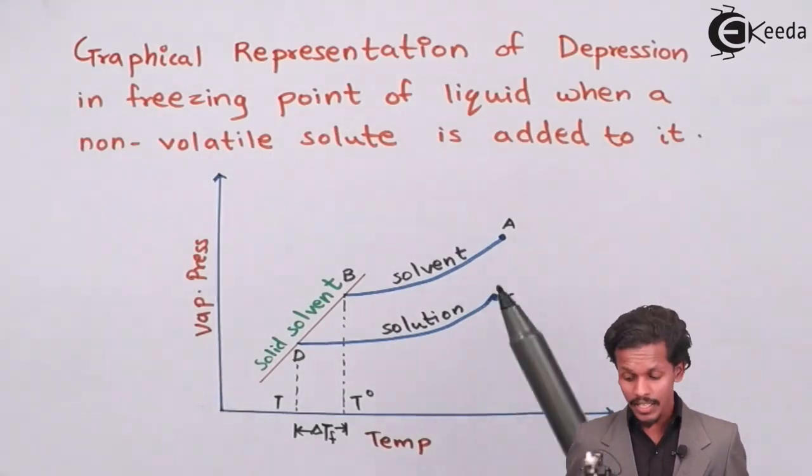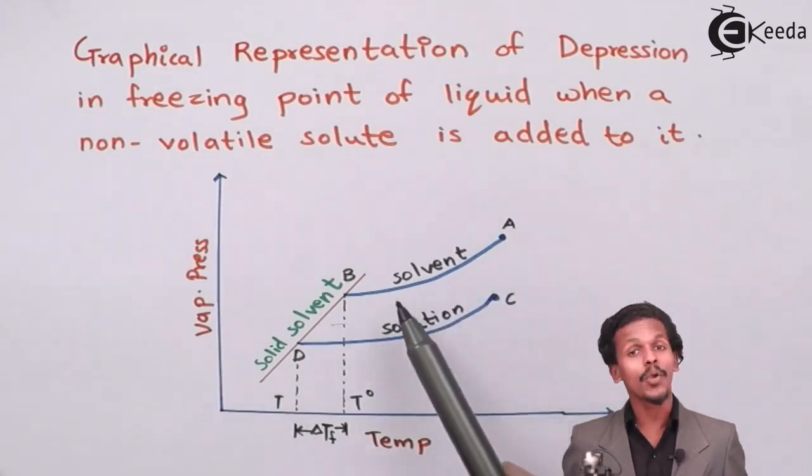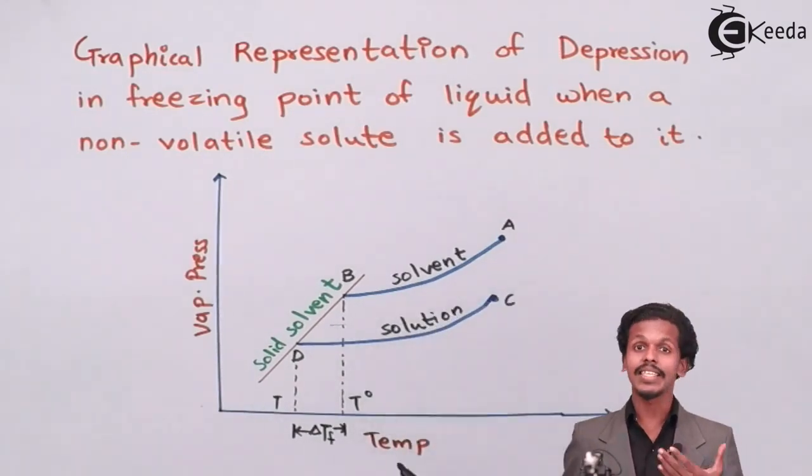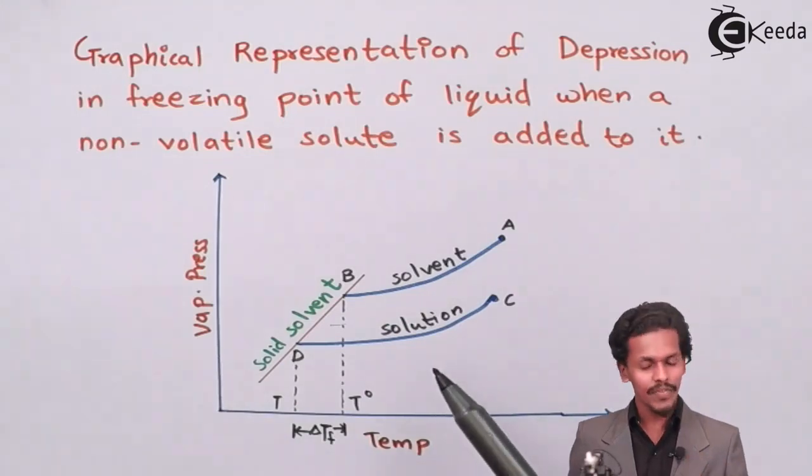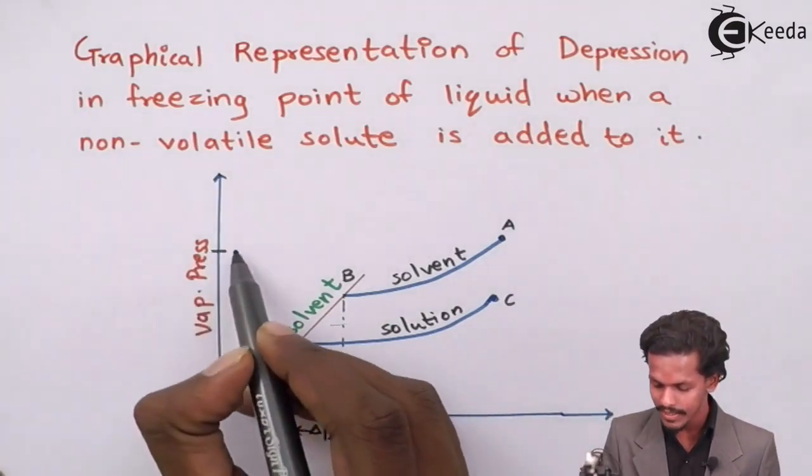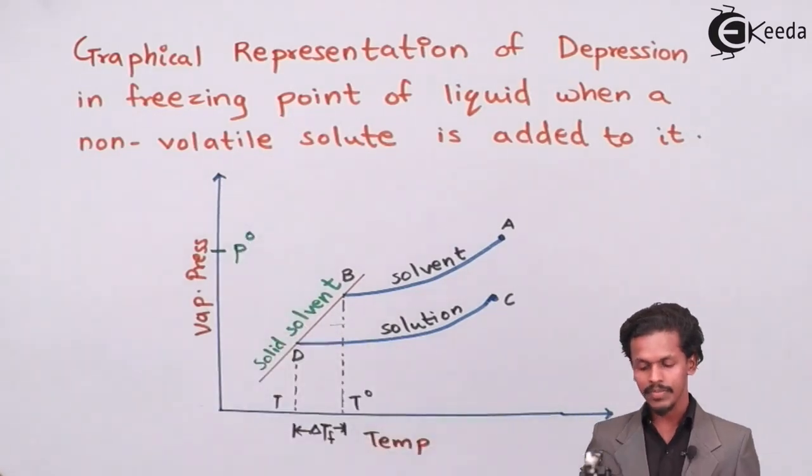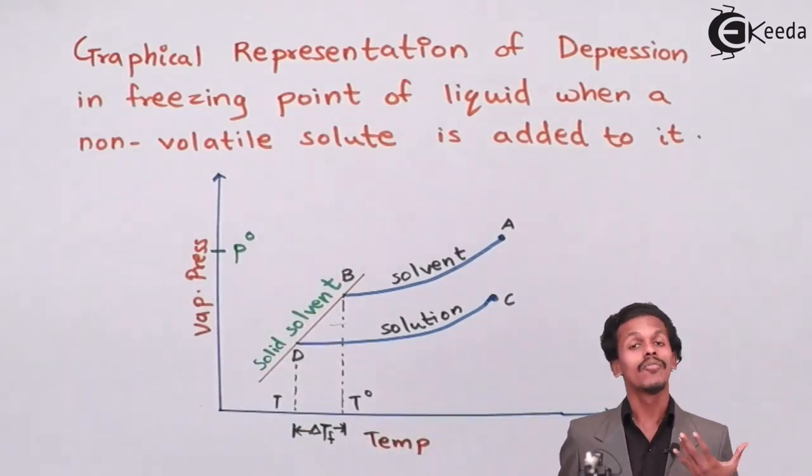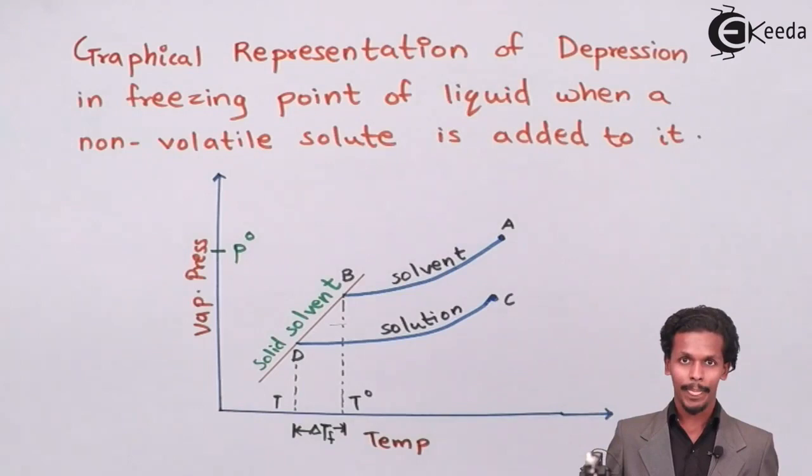Consider the curve AB which is for a pure solvent which has a fixed vapor pressure. I will write it as P naught, the reason being P naught is because it is for a pure solvent.